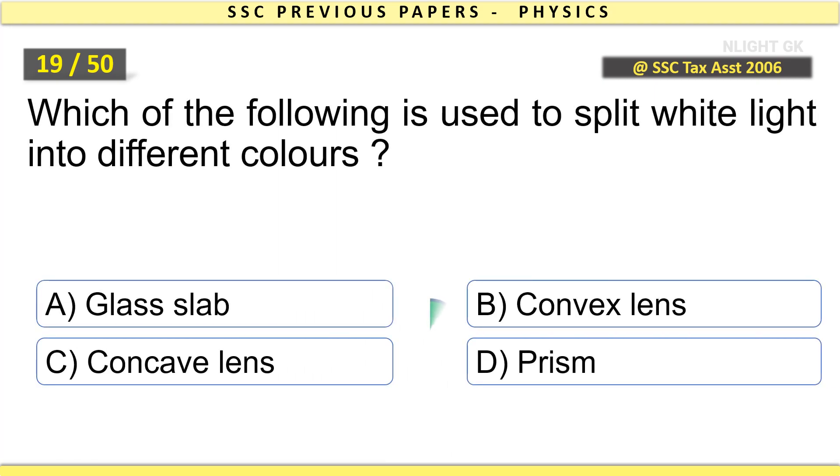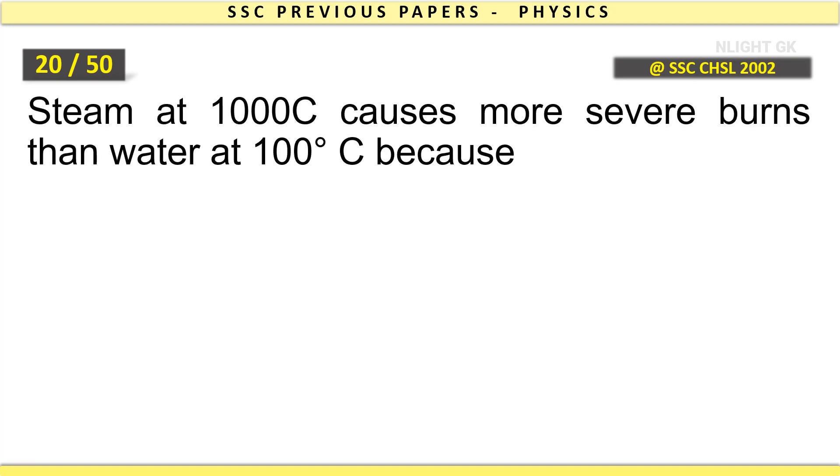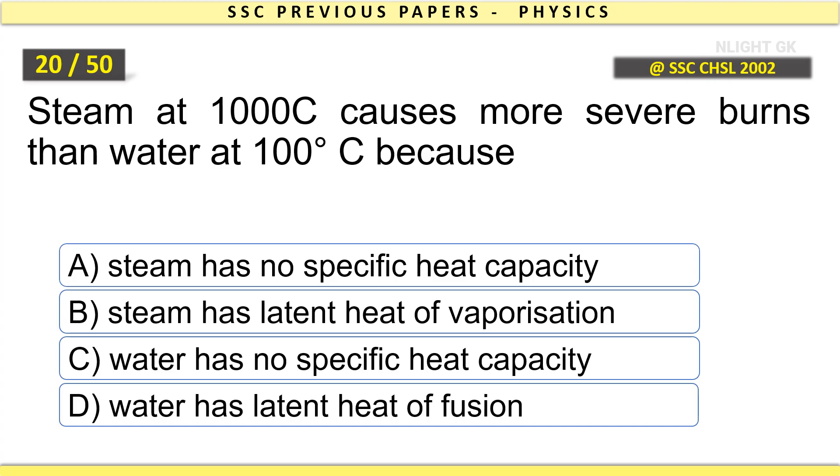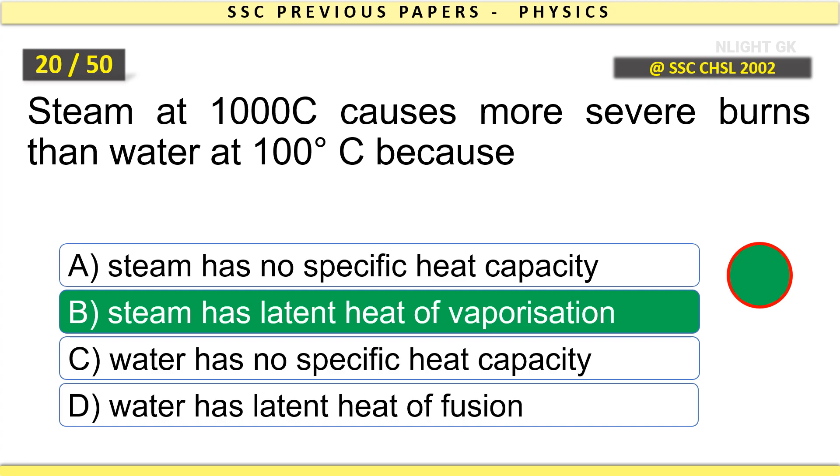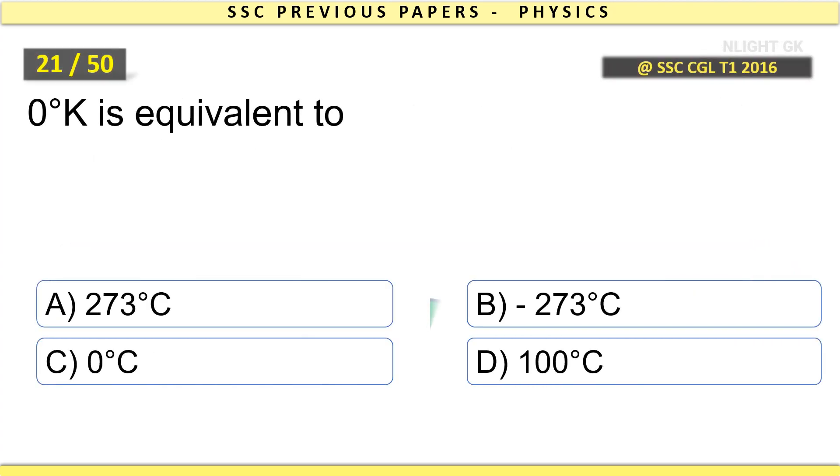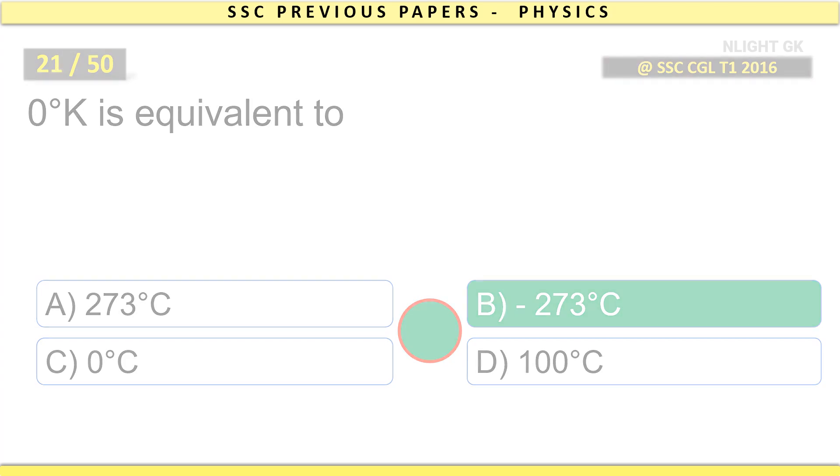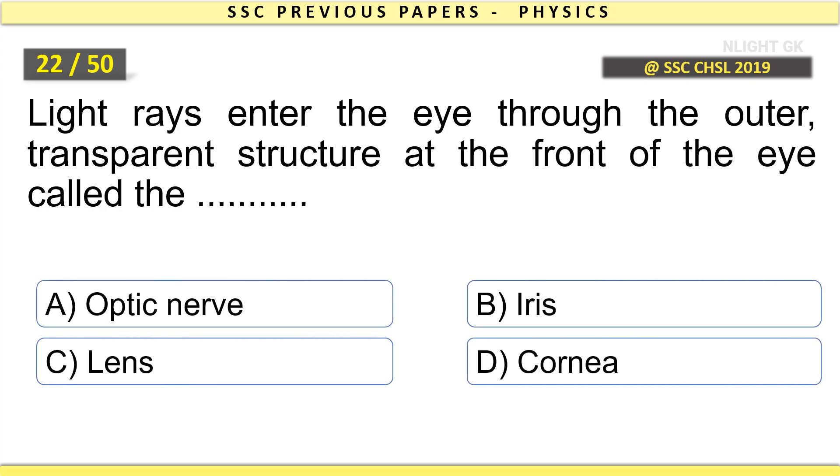Which of the following is used to split white light into different colors? Prism. Steam at 100 degrees Celsius causes more severe burns than water at 100 degrees Celsius because steam has latent heat of vaporization. Zero Kelvin is equivalent to minus 273 degrees Celsius.